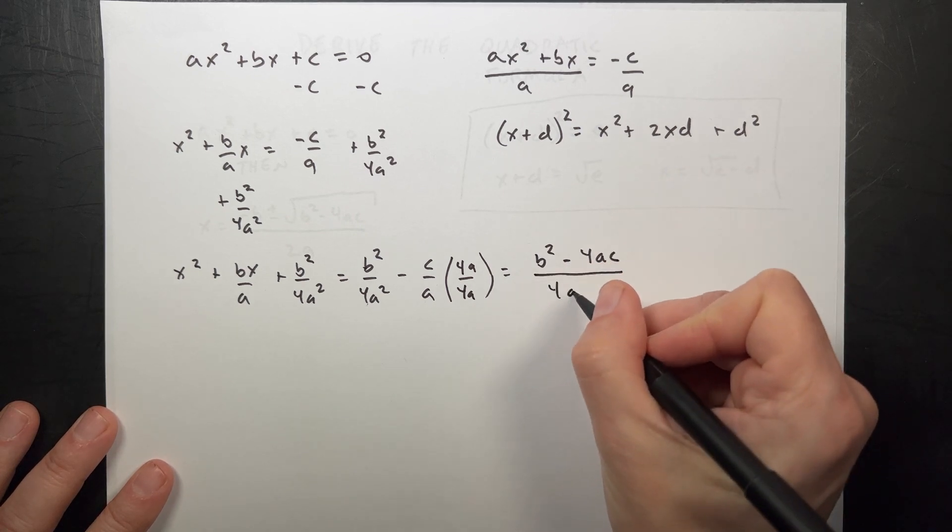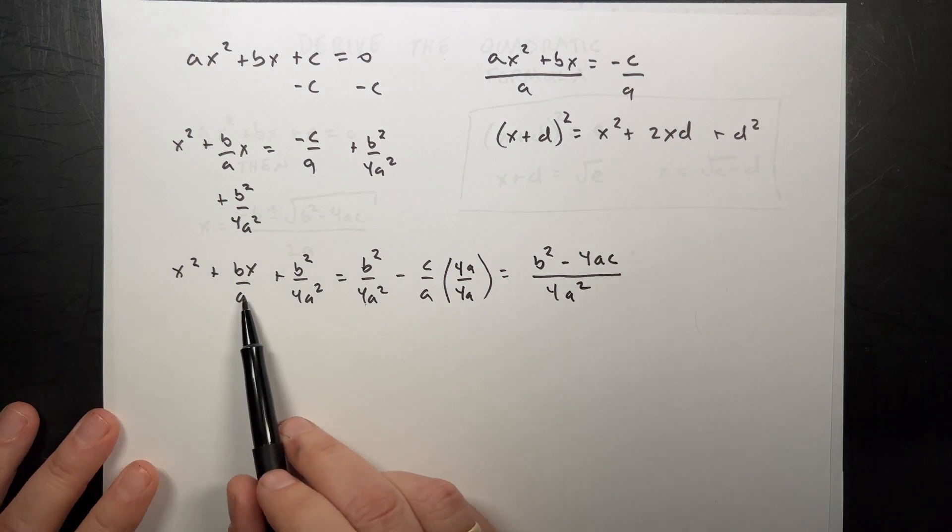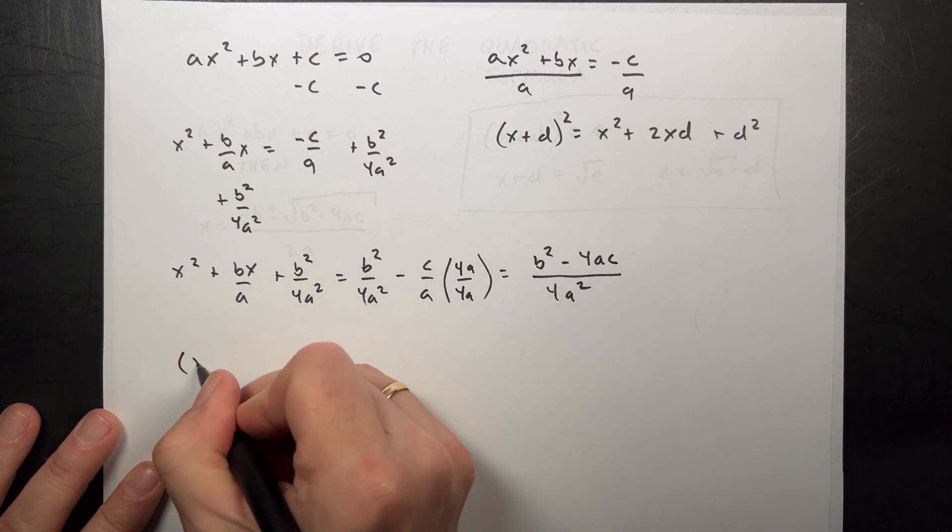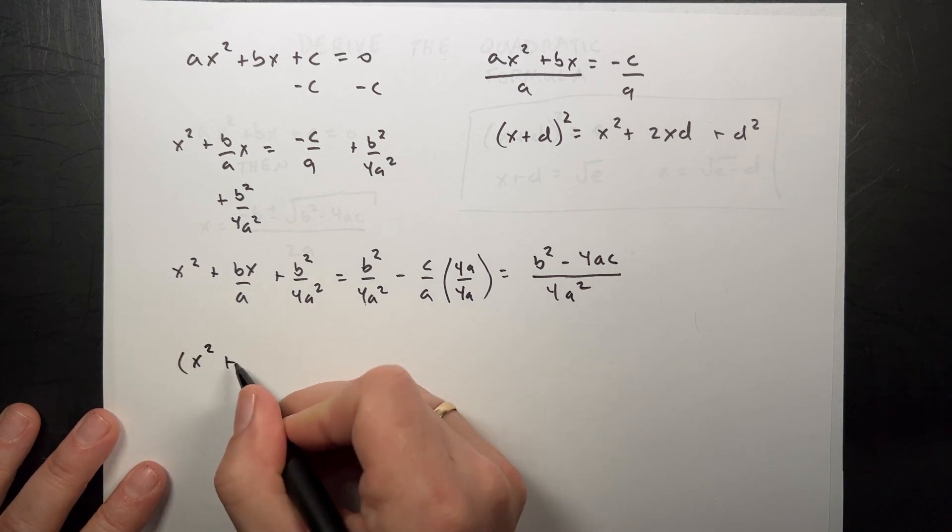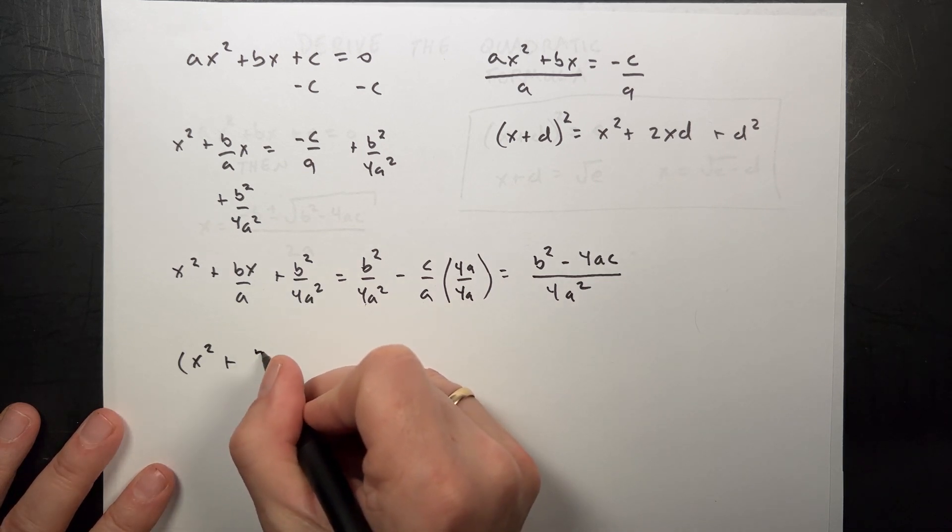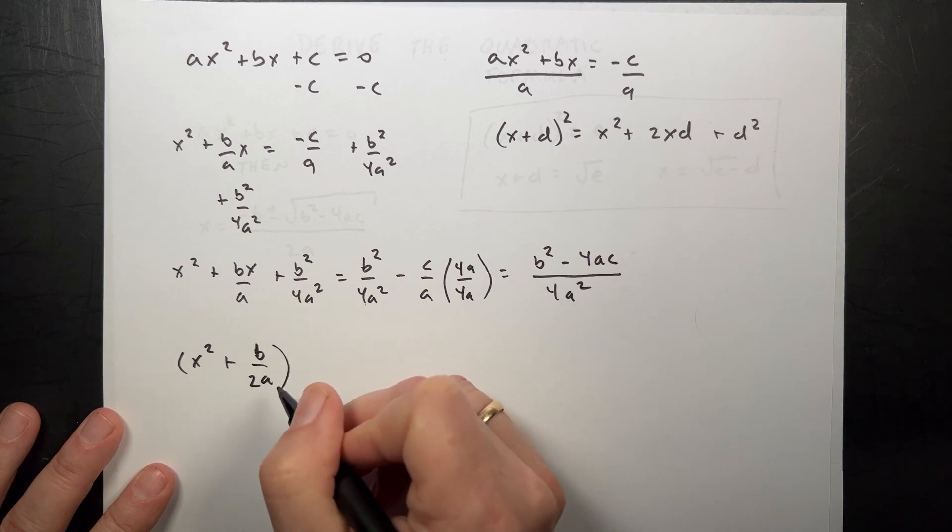So I get b squared minus 4ac, starting to look familiar, all over 4a squared. Now on this side I can actually factor that into a perfect square. So this is going to be x squared plus this, the square root of this, which is going to be equal to b over 2a.